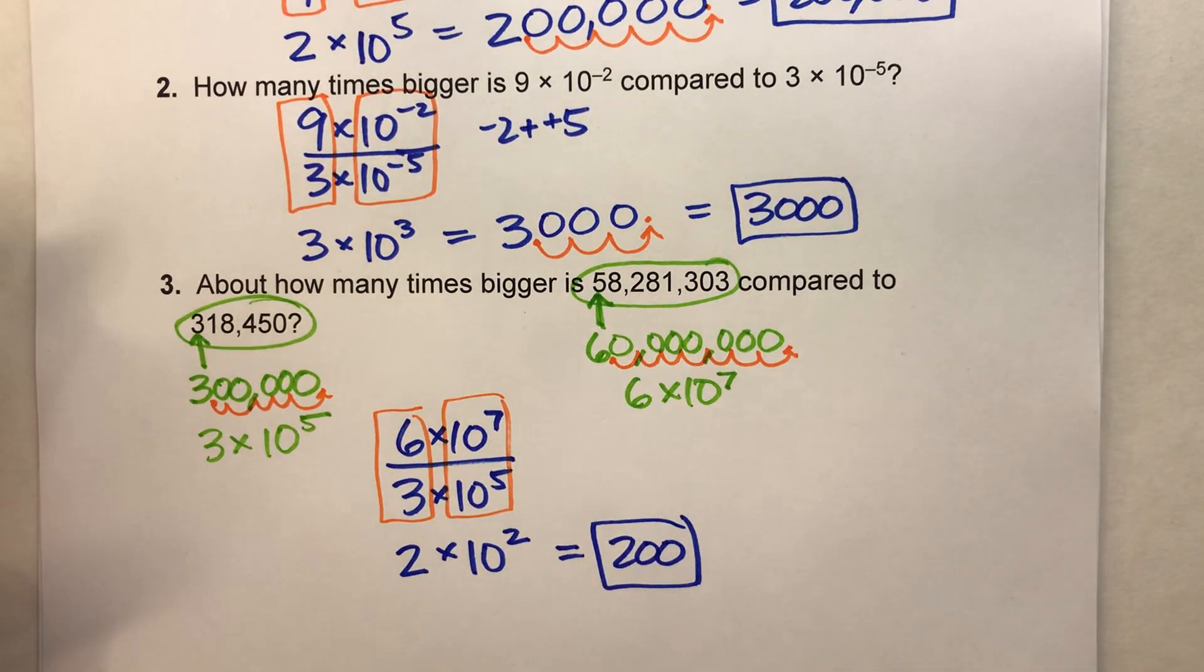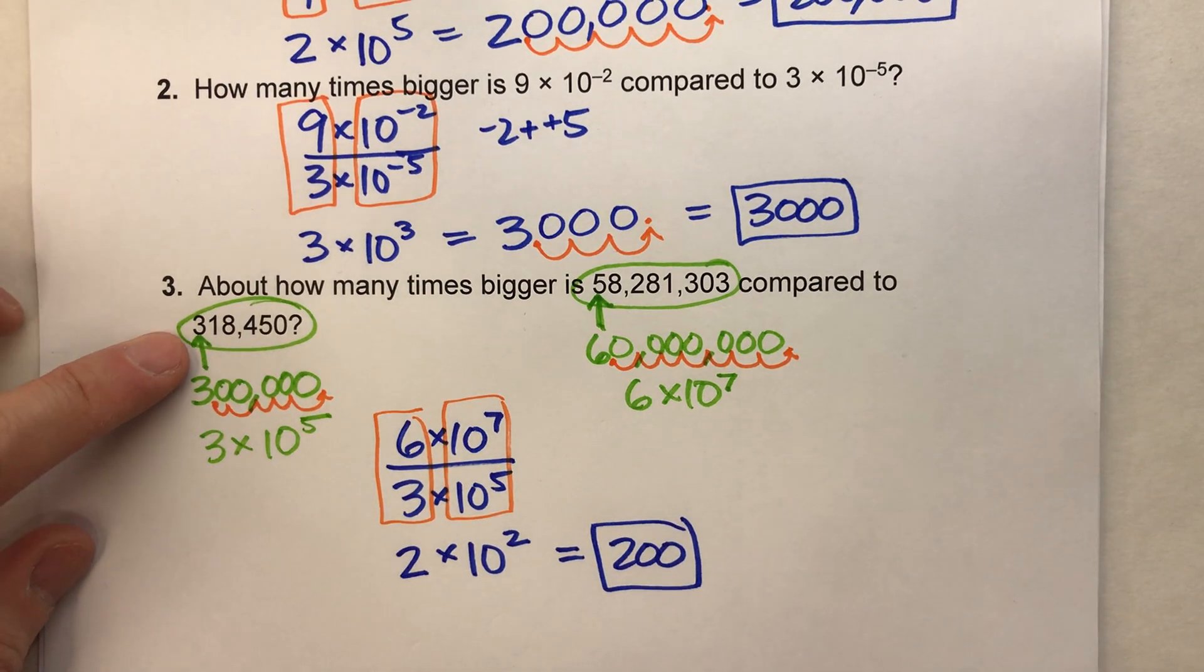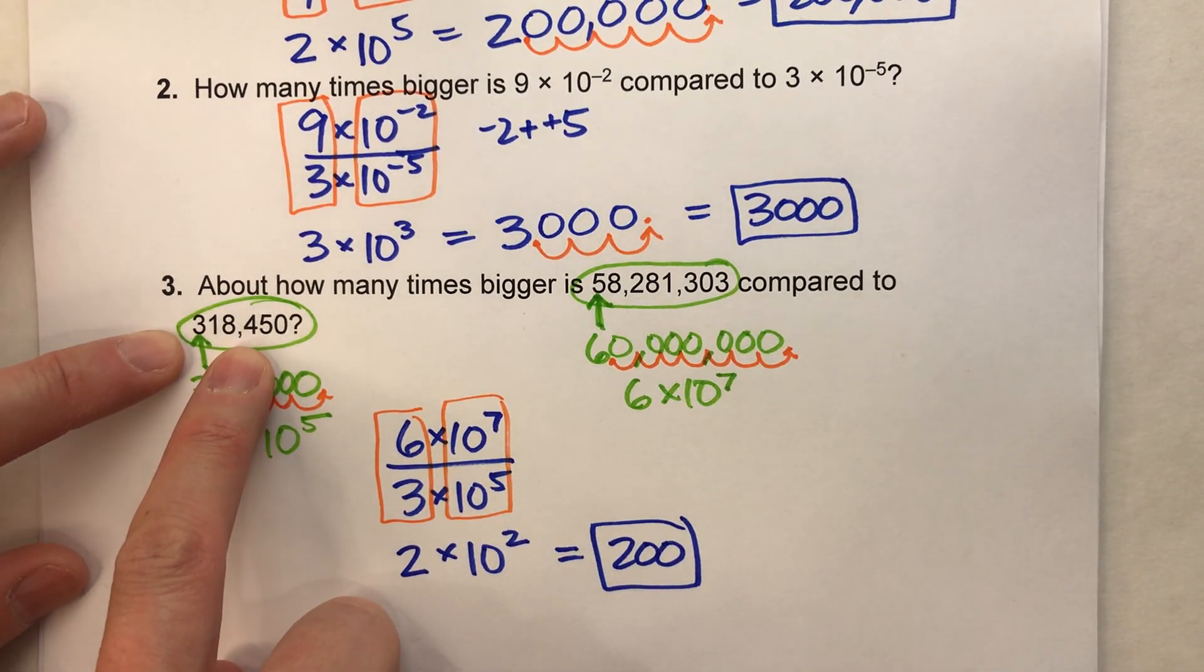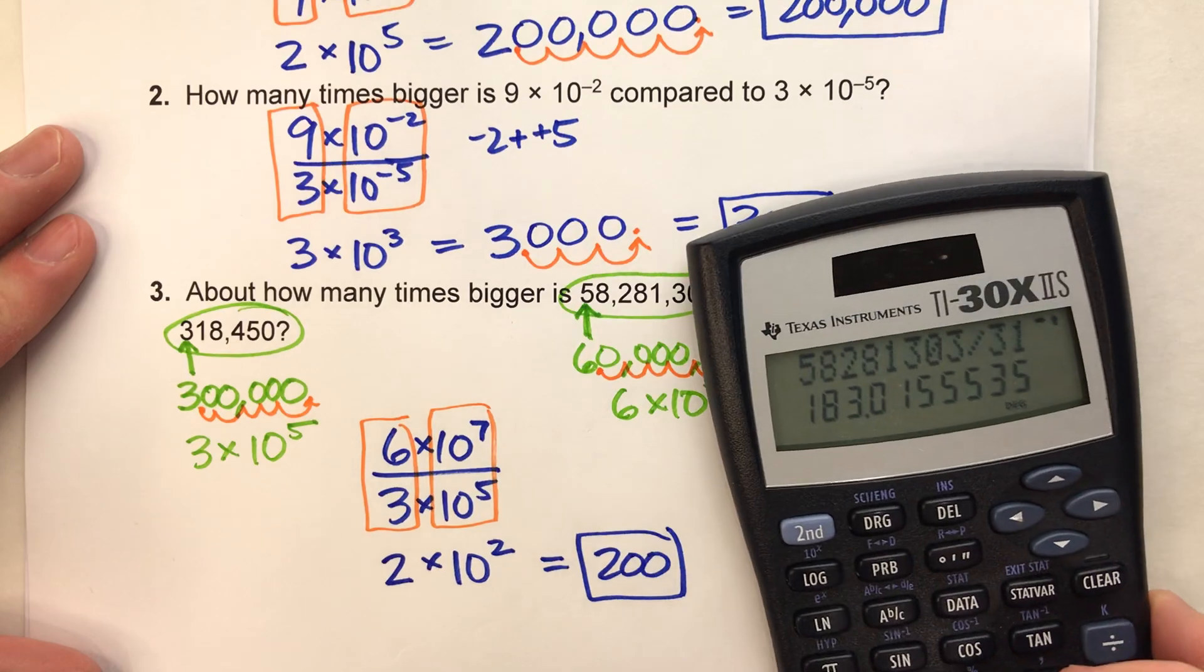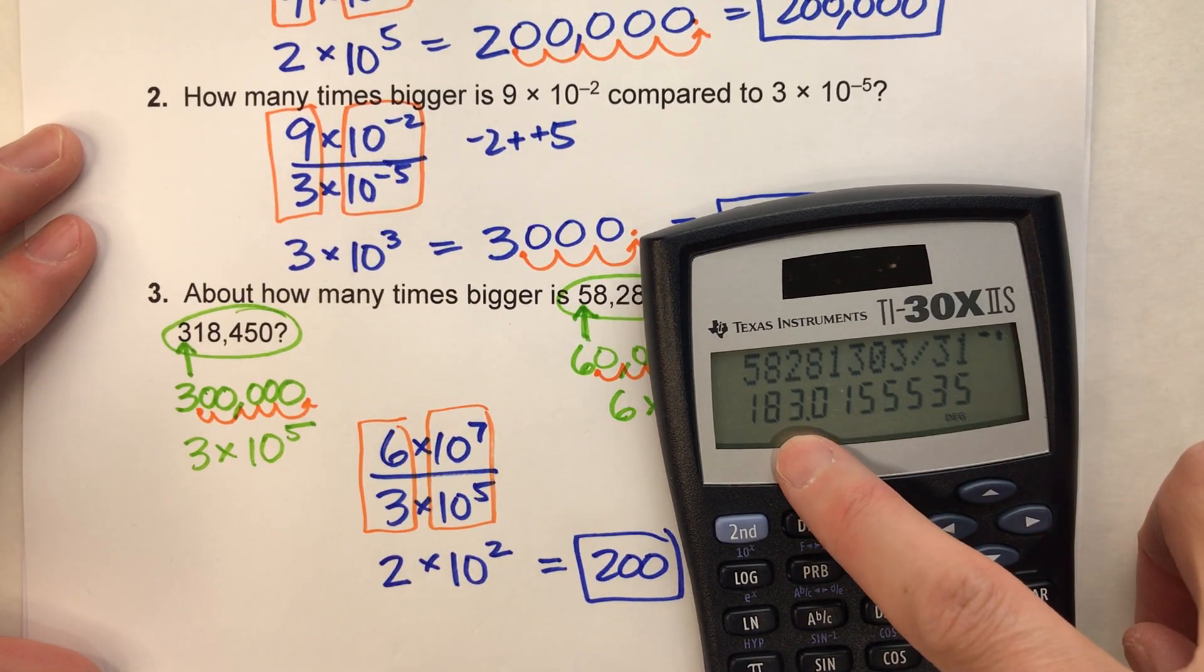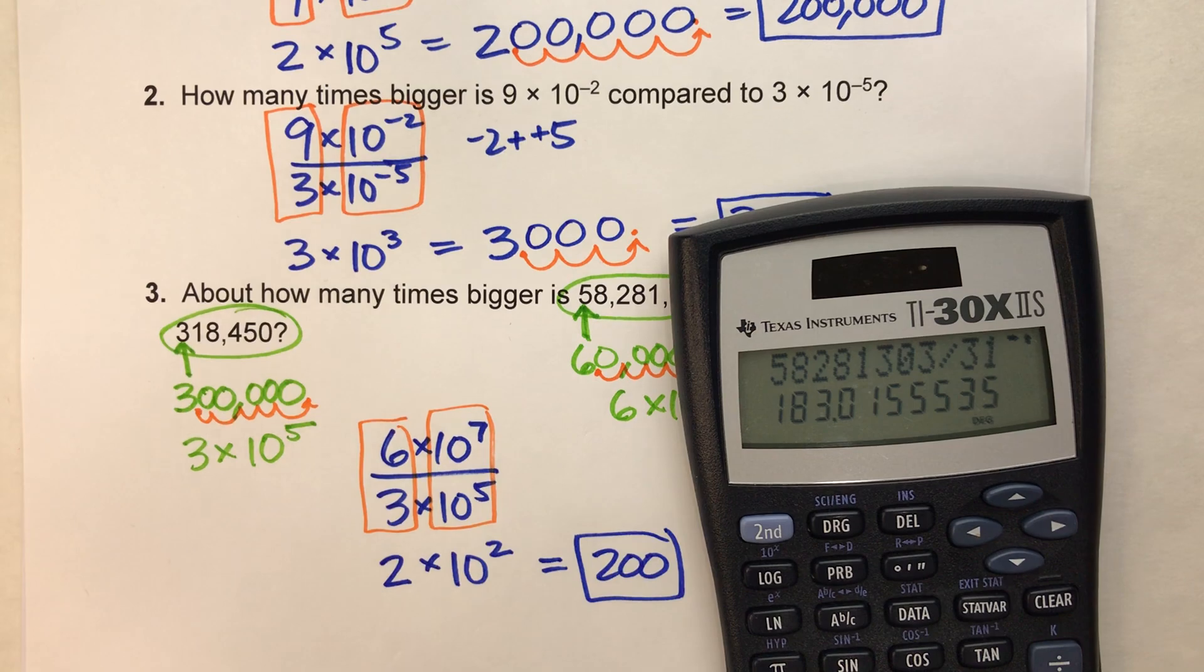So what that tells us is this original number, 58,281,303, is about 200 times bigger than 318,450. And if you recall on the calculator when we did it before, the exact answer came out to 183, which is not that far away from 200.